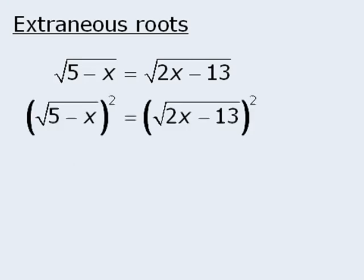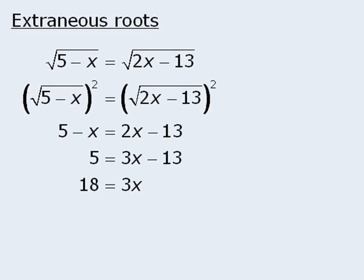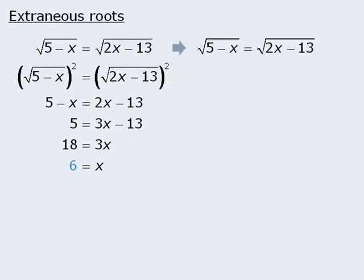Here's how we do this. For this equation, we'll first raise both sides to the power of 2 to get 5 minus x is equal to 2x minus 13. To solve this new equation, we'll first add x to both sides, then we'll add 13 to both sides, and finally we'll divide both sides by 3 to get x equals 6. At this point, we must check for extraneous roots, so we'll take the original equation and plug 6 in for x.